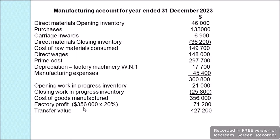Factory profit is 20% and is a markup calculated on cost. So we take cost of goods manufactured of $356,000 and multiply by 20%, giving factory profit of $71,200. Adding this to $356,000 gives manufactured goods transfer price of $427,200, which is transferred to the statement of profit or loss.